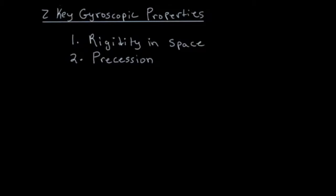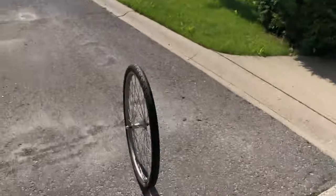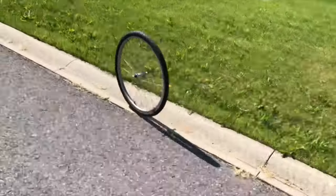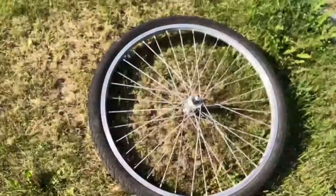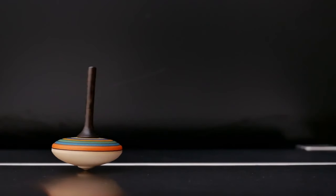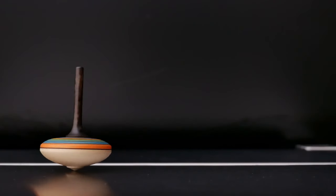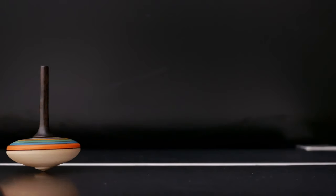Rigidity, or rigidity in space, refers to a spinning object's tendency to want to maintain the axis on which it's spinning. The faster the spin, the higher the rigidity in space. If a wheel isn't spinning it'll just fall over, but when it's spinning it wants to stay spinning on that axis. This is why rigidity in space is also known as gyroscopic inertia.